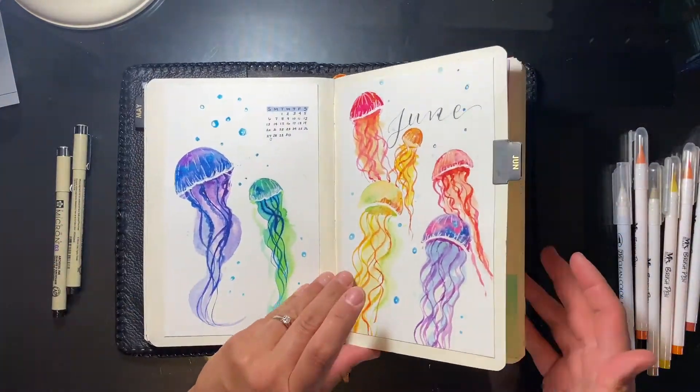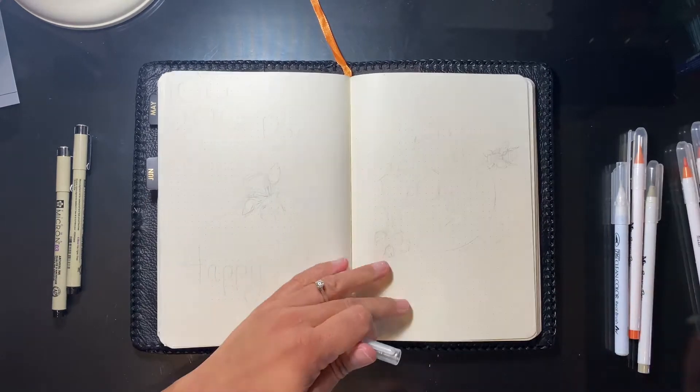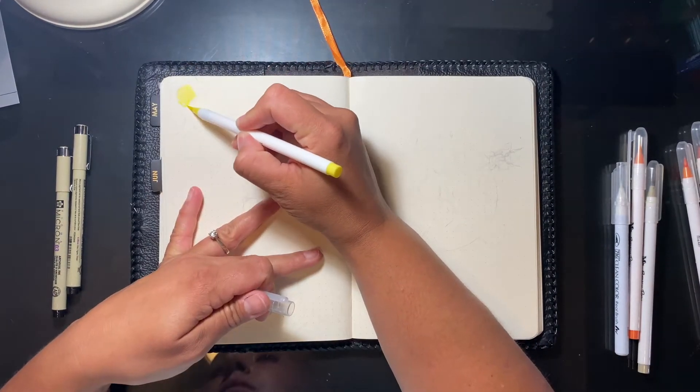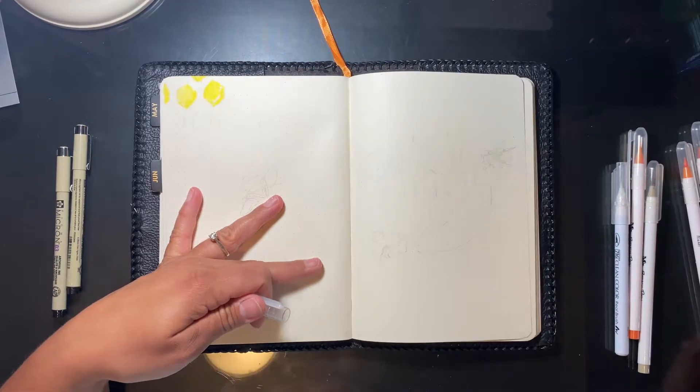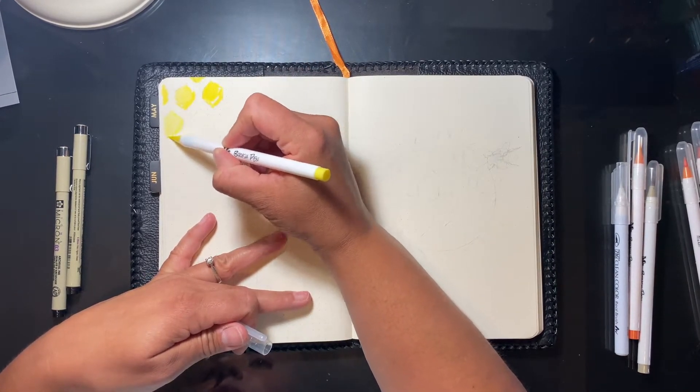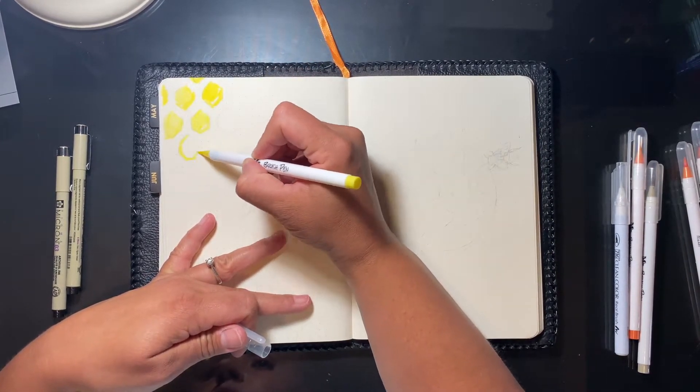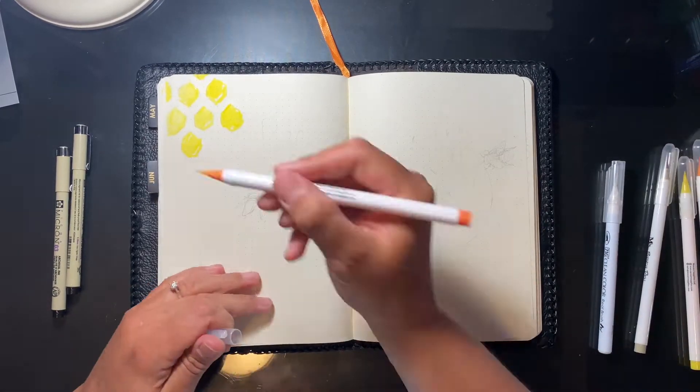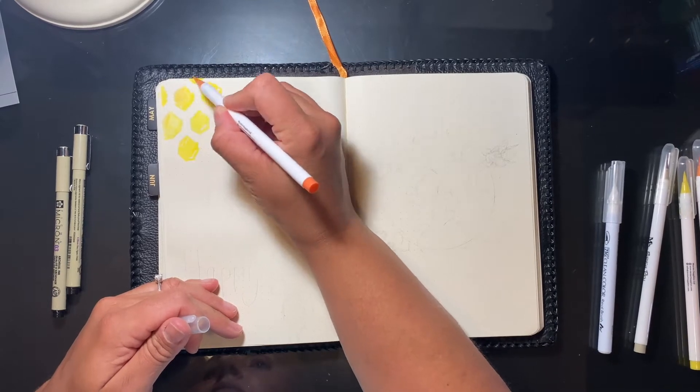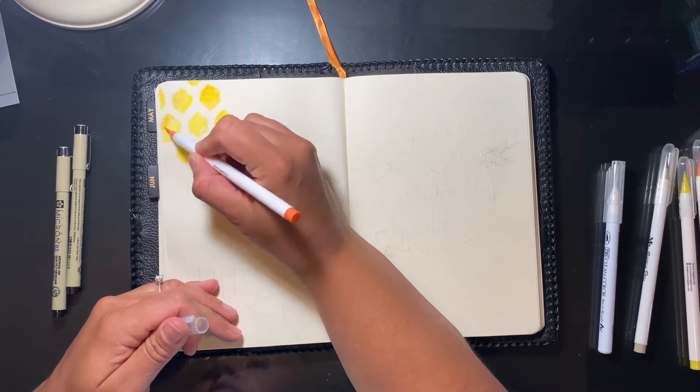Again, I'm using my Rhodia Rhodiarama notebook, and it's a soft cover, so I do have it enclosed in this leather cover that my sister handmade for me about three birthdays ago. I'll leave all the information linked down below if you're interested in handmade leather journal covers or handmade goods made out of leather.